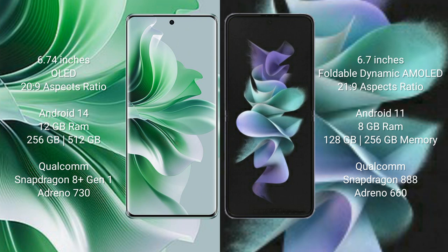Oppo Reno 11 Pro comes with 12GB RAM and 256GB or 512GB internal storage, with a Qualcomm Snapdragon 8 Gen 1 processor and an Adreno 730 GPU.